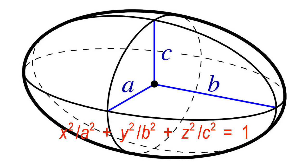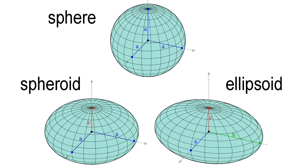If two of these numbers are equal, the ellipsoid is a spheroid. If all three are equal, it's a sphere. The intersection of an ellipsoid with a plane is either a single point or an ellipse. Ellipsoids can also be defined in higher dimensions.